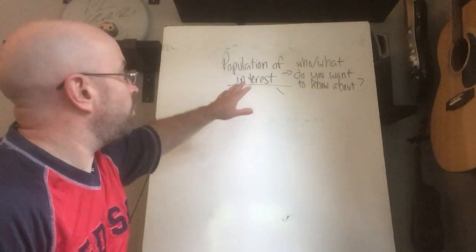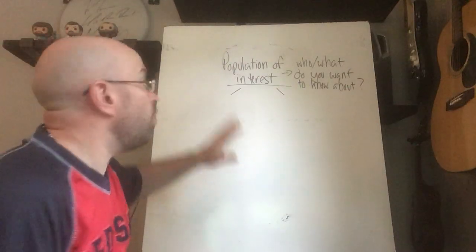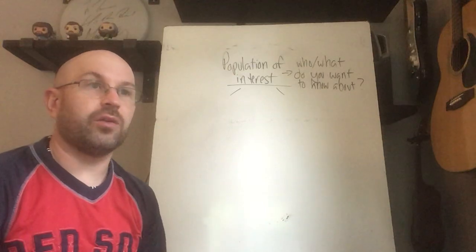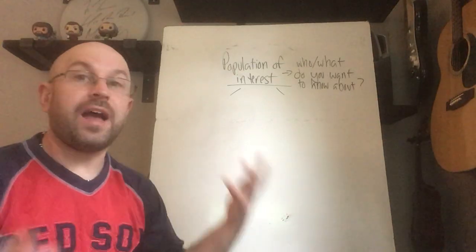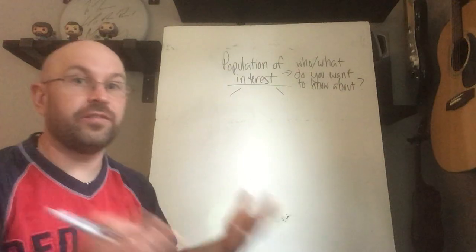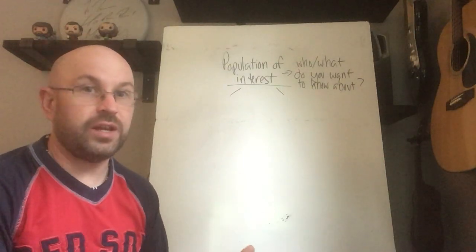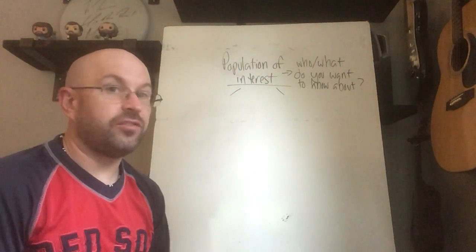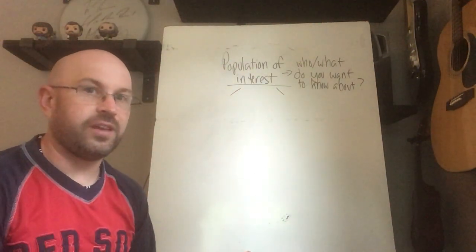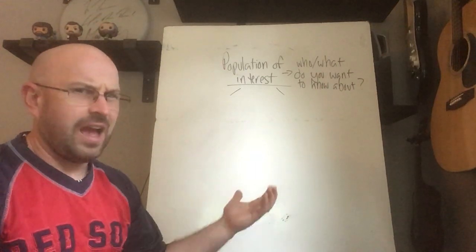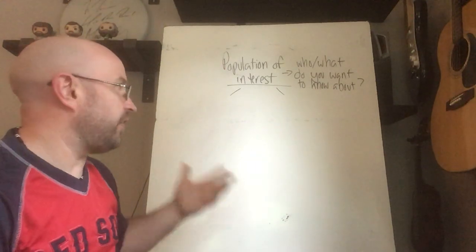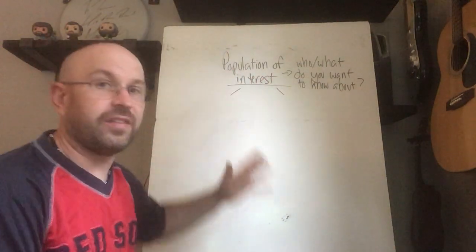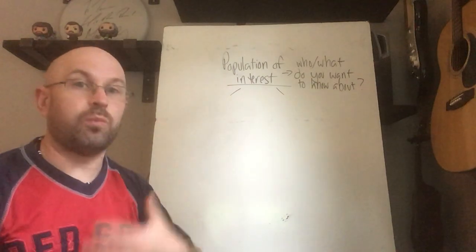First of all, you always start out with what's called a population of interest. That's who or what you want to know about. Like say you wanted to figure out the average number of Apple products owned by an individual in Massachusetts. So that's your population of interest — all the people in Massachusetts. Or maybe you want to narrow it down to an age range, maybe everyone above 18. Who are you interested in? What are you interested in?